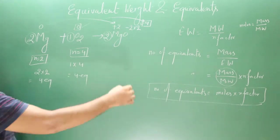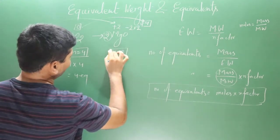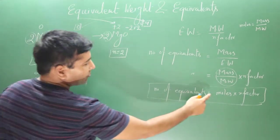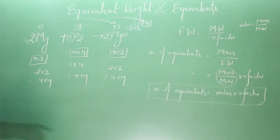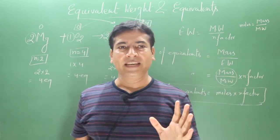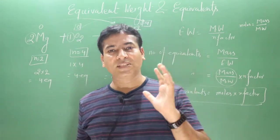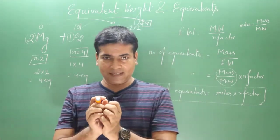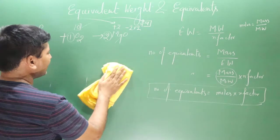For magnesium oxide: the n-factor value is 2. Moles × n-factor = 2 × 2 = 4 equivalents. Notice that for each substance in this reaction, we get the same number of equivalents — 4. This is the beauty of this concept: in any chemical reaction, the number of equivalents of each reactant equals the number of equivalents of each product.